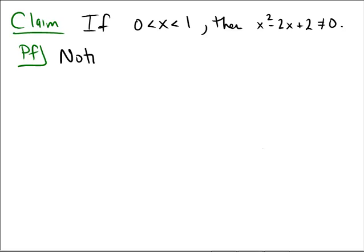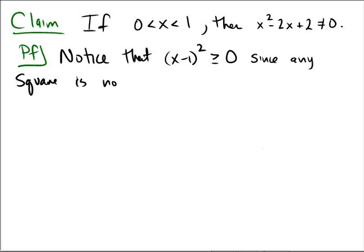Notice that (x - 1)² is always bigger than or equal to 0, since any square is always non-negative.